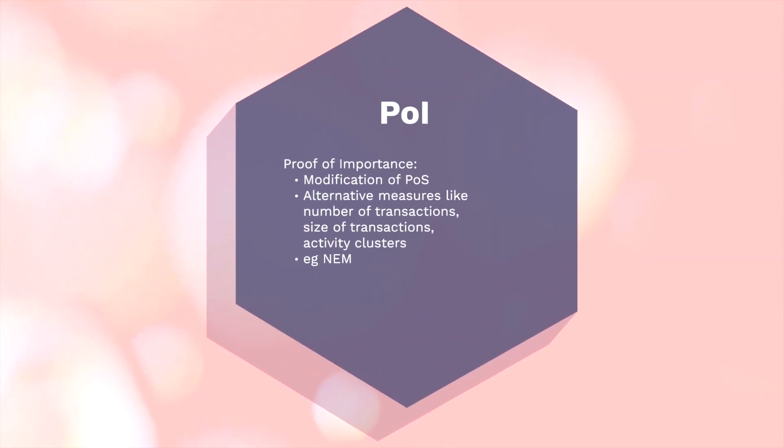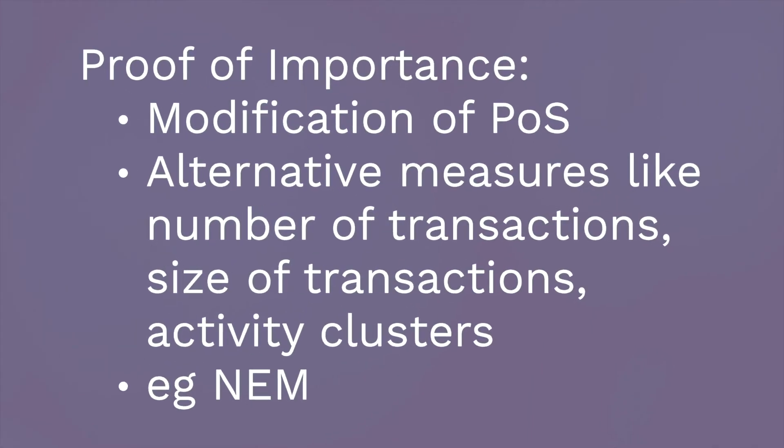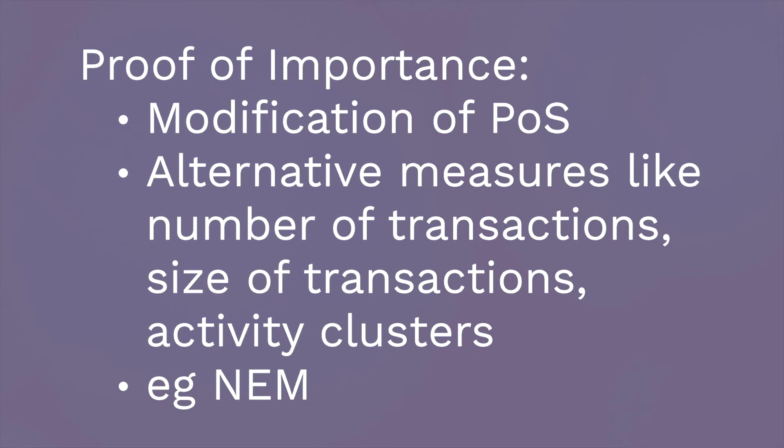Let's see another consensus mechanism algorithm which falls under the same category, known as Proof of Importance. Proof of Importance is a modification of Proof of Stake. Proof of Stake involved the feature that only a blockchain node having a high amount of stake in terms of cryptocurrency can join the block. Proof of Importance adds certain more variables to it, and adding these variables makes it more compatible and flexible compared to Proof of Stake.